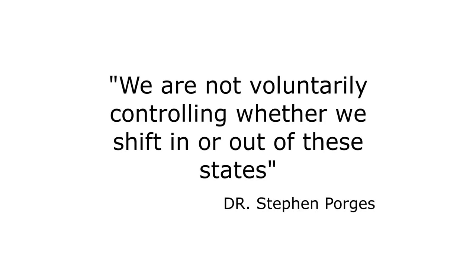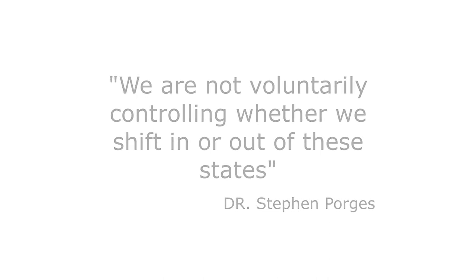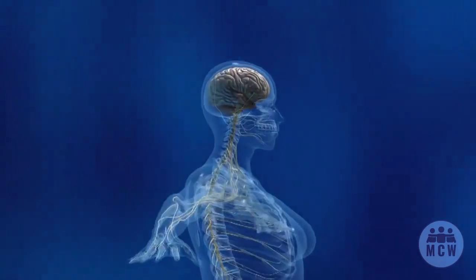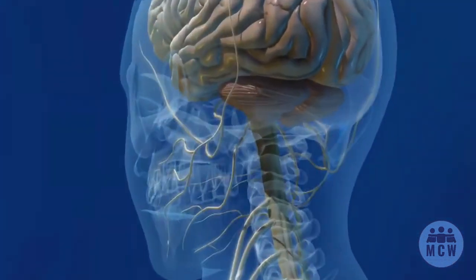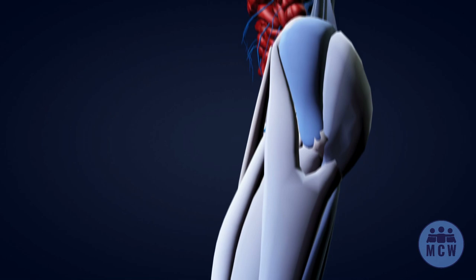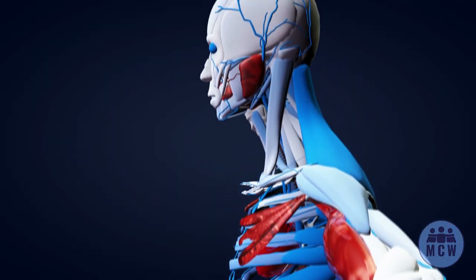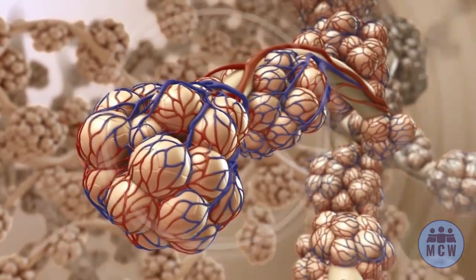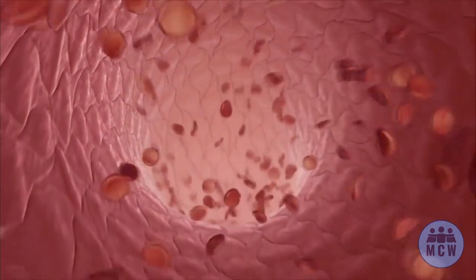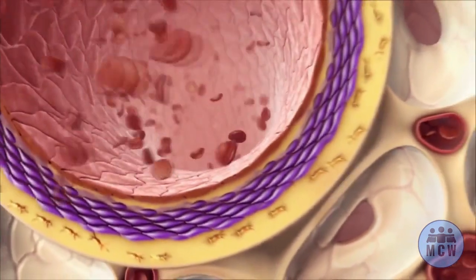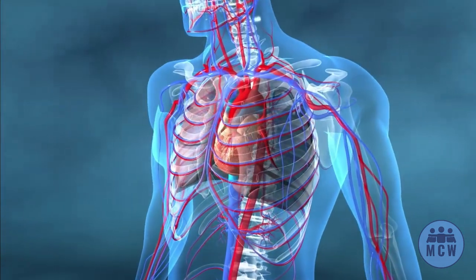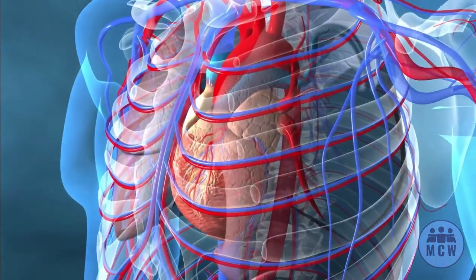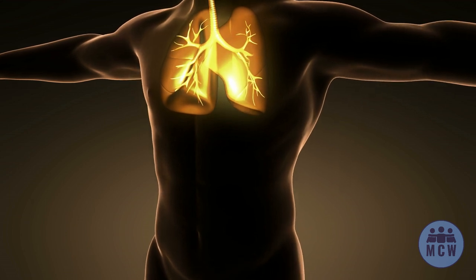Dr. Stephen Porges quotes: 'We are not voluntarily controlling whether we shift in or out of these states.' The polyvagal theory has everything to do with the autonomic nervous system. The ANS is responsible for regulating all the internal stuff you don't need to think about, like breathing, digestion, and heart rate. When we go into a different primary or mixed state, there are autonomic shifts that take place. For example, our breathing changes significantly: in safe and social it is calm, deep, and into the belly; versus fight and flight which is faster, shallow, and into the chest; and changes again in shutdown state — very shallow and small.